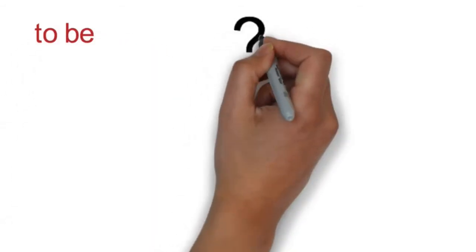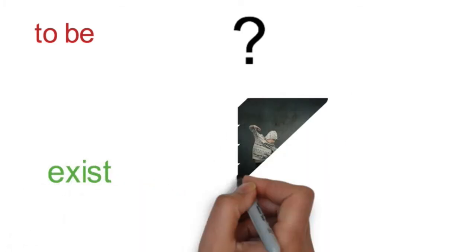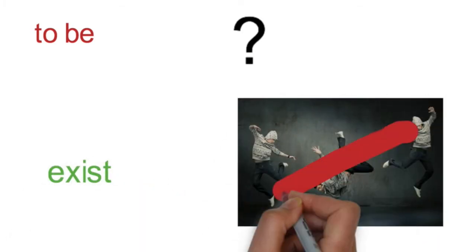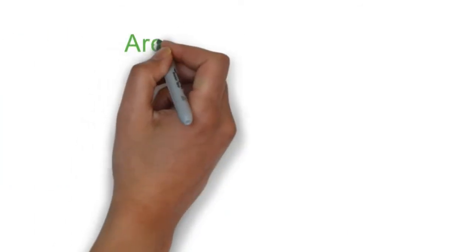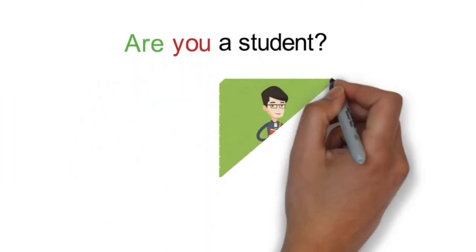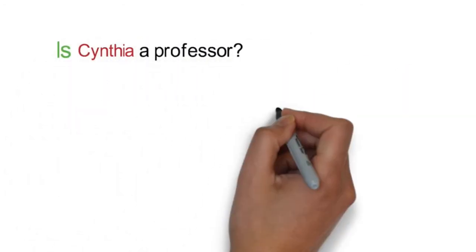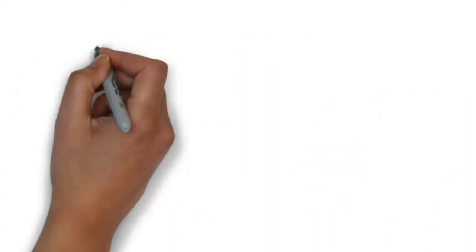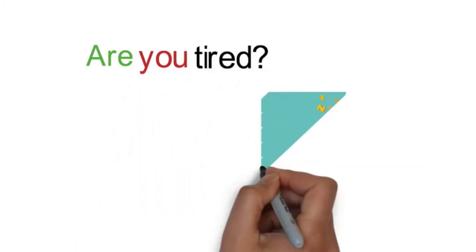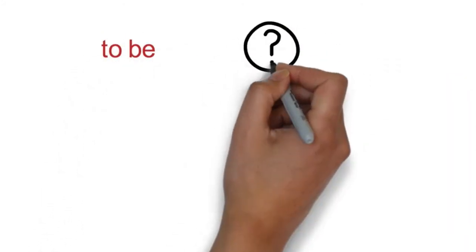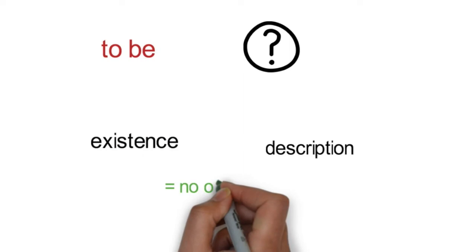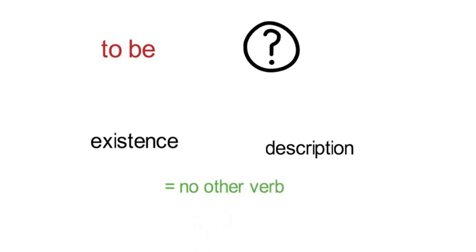Remember, we use the correct form of the verb to be in a question to show that we exist. It does not show any actions. Examples are: Are you a student? Is Cynthia a professor? Are you tired? When the verb to be is used for this reason, no other verb is used.